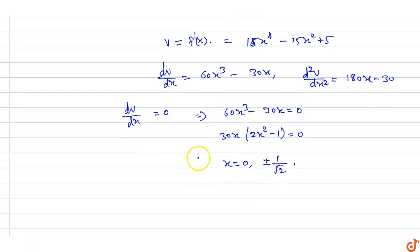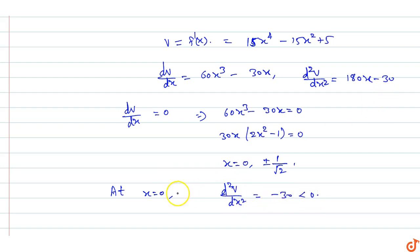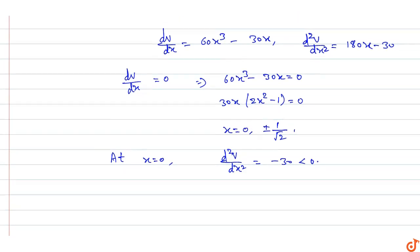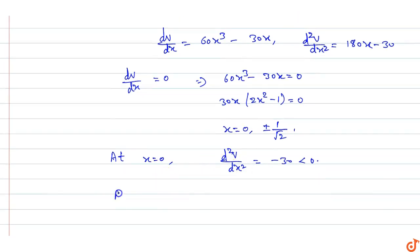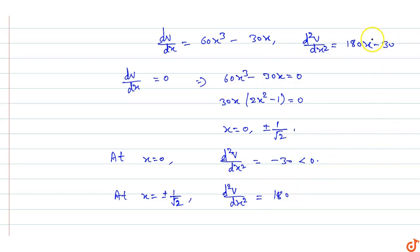At x = 0, d²v/dx² = -30, which is less than 0 — this means at x = 0 the rate of change is maximum. Now at x = ±1/√2, substituting into d²v/dx²: 180×(1/2) - 30 = 90 - 30 = 60.